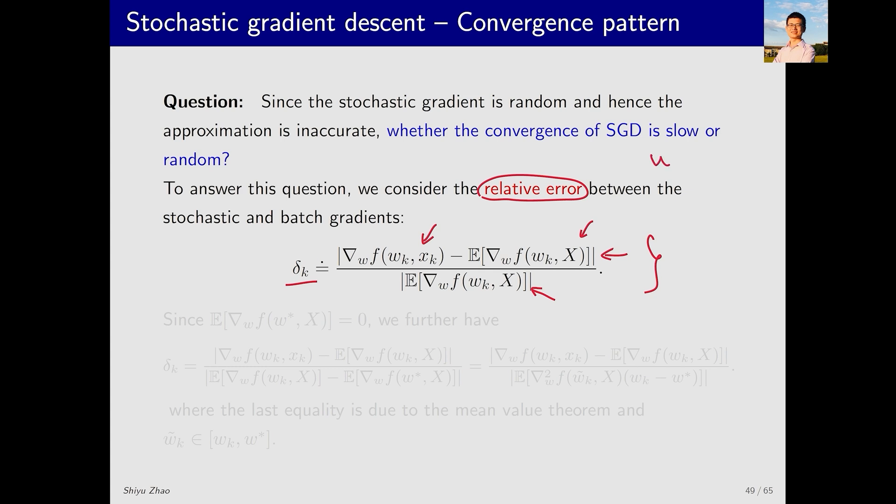The conclusion is that when w_k is very far from w*, the behavior of SGD is very similar to GD because the relative error is small. When w_k is close to w*, the SGD exhibits greater randomness. Let's see how we can obtain this conclusion.